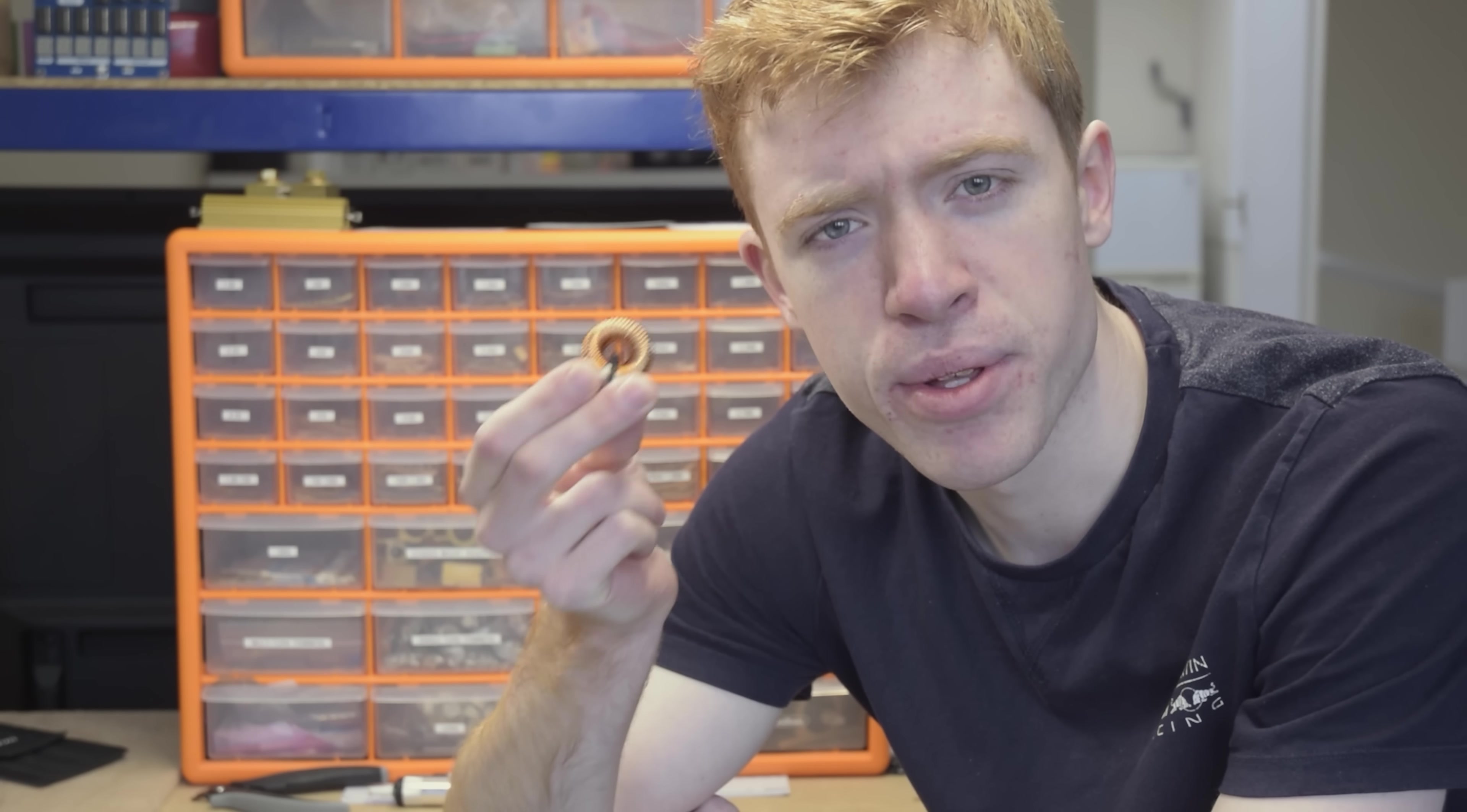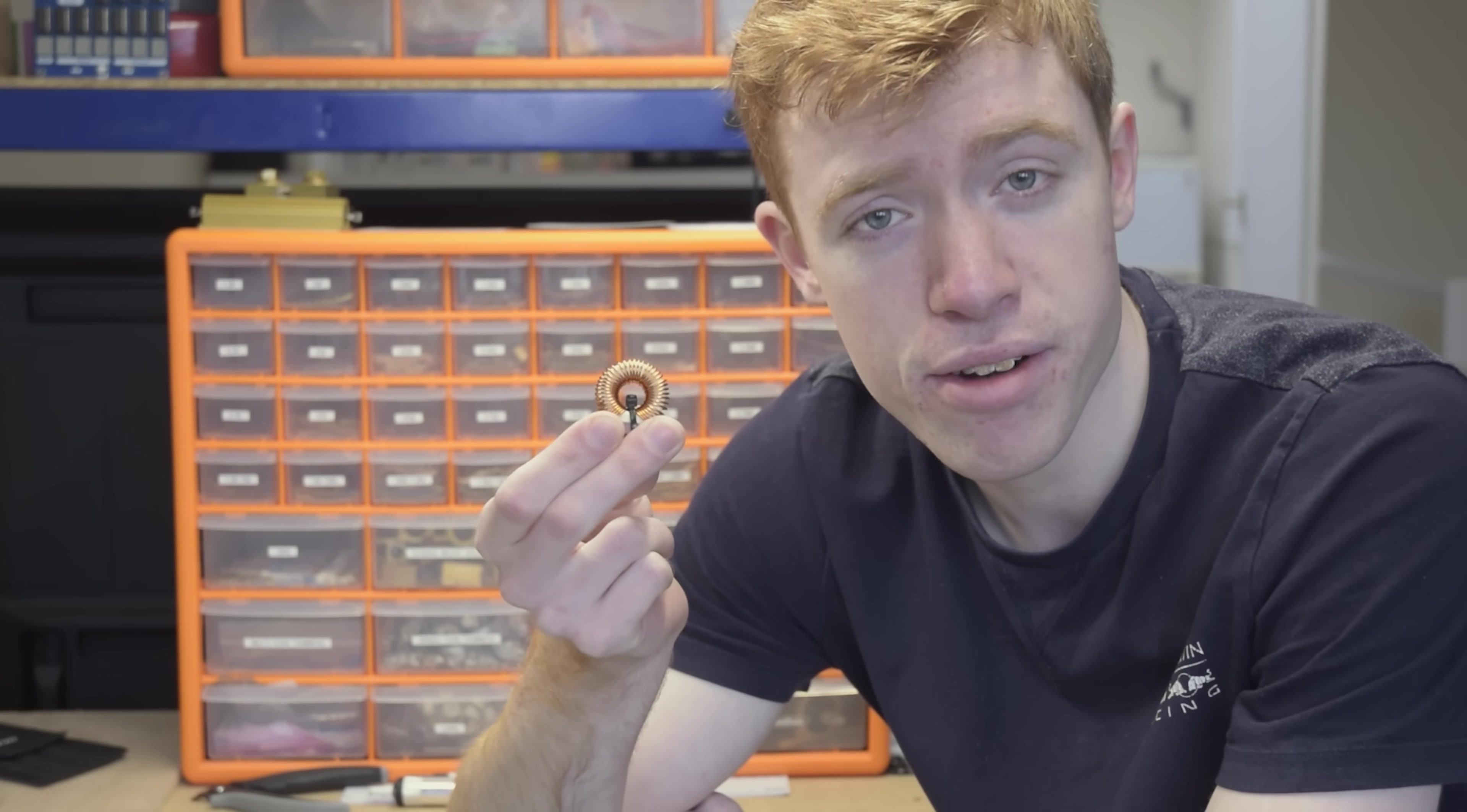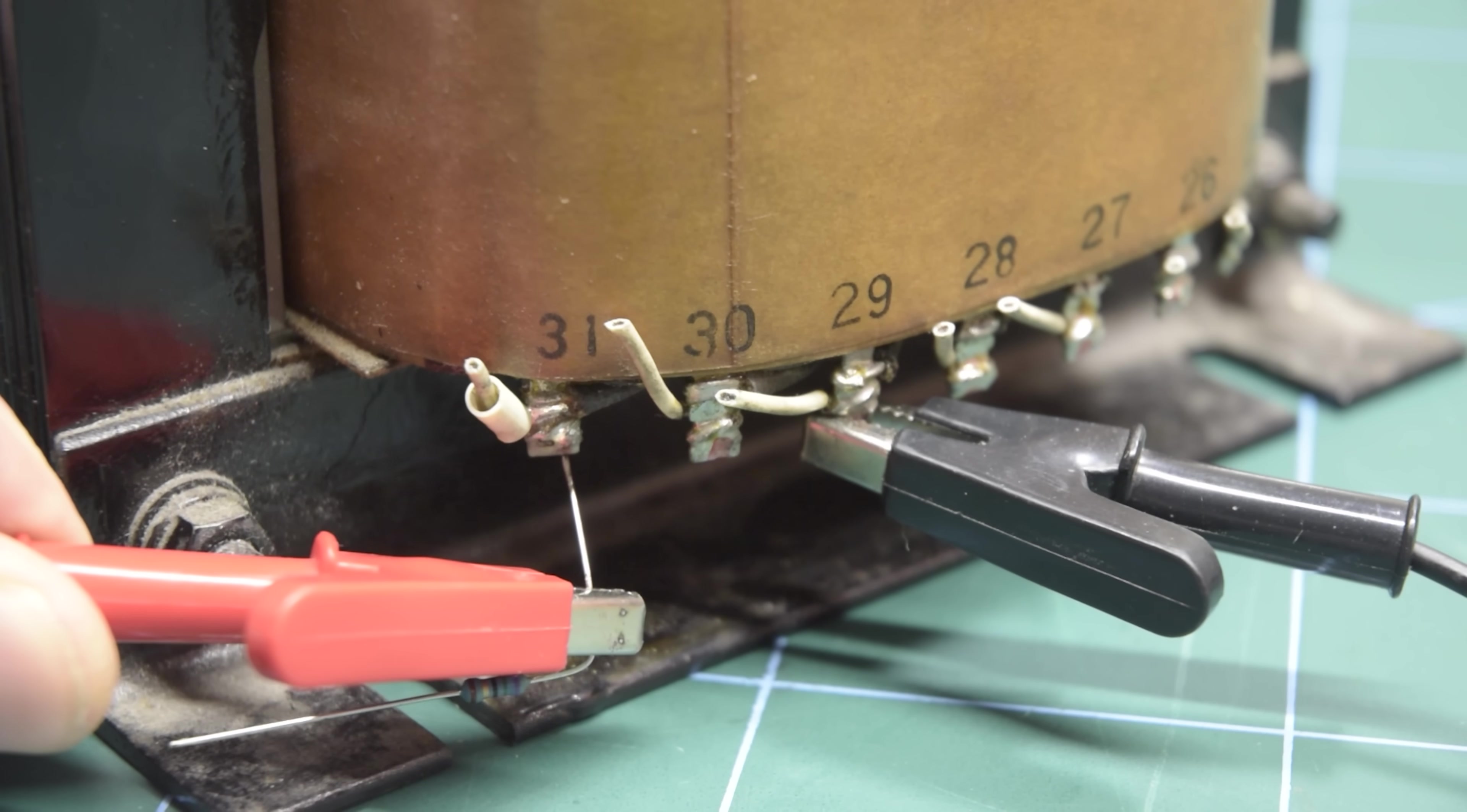In contrast, inductors are used to smooth current. Again, they'll do whatever they can to maintain the current going through them, they're this time using voltage rather than current as their weapon of choice. This means if you try to quickly change the current flowing through an inductor, it'll counter with a voltage, and can produce dangerously high voltages if disconnected while current is flowing.